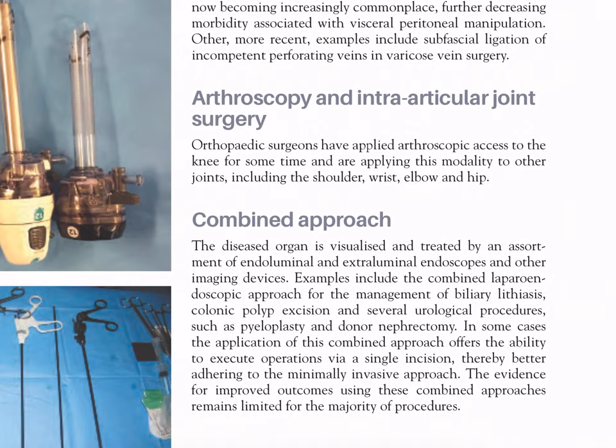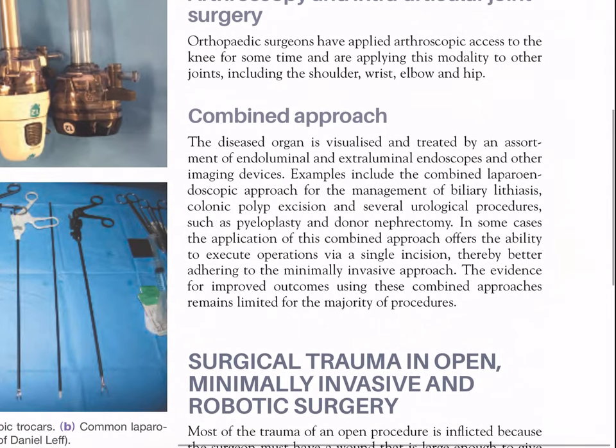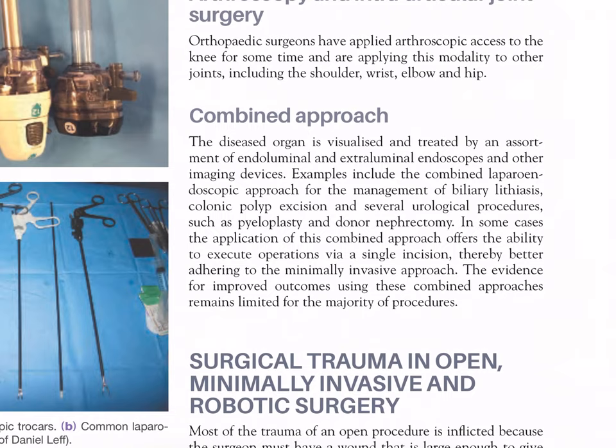Extraperitoneal approaches to retroperitoneal organs as well as hernia repair are now becoming increasingly commonplace, further decreasing morbidity associated with visceral peritoneal manipulation. Arthroscopy and intraarticular joint surgery: orthopedic surgeons have applied arthroscopic access to the knee for some time and are now applying this modality to other joints including the shoulder, wrist, elbow, and hip. Combined approach: the diseased organ is visualized and treated by an assortment of endoluminal and extraluminal endoscopes and other imaging devices. Examples include the combined laparoendoscopic procedure for management of biliary lithiasis, colonic polyp excision, and urological procedures such as pyeloplasty and donor nephrectomy. The evidence for improved outcomes using these combined approaches remains limited for the majority of procedures.